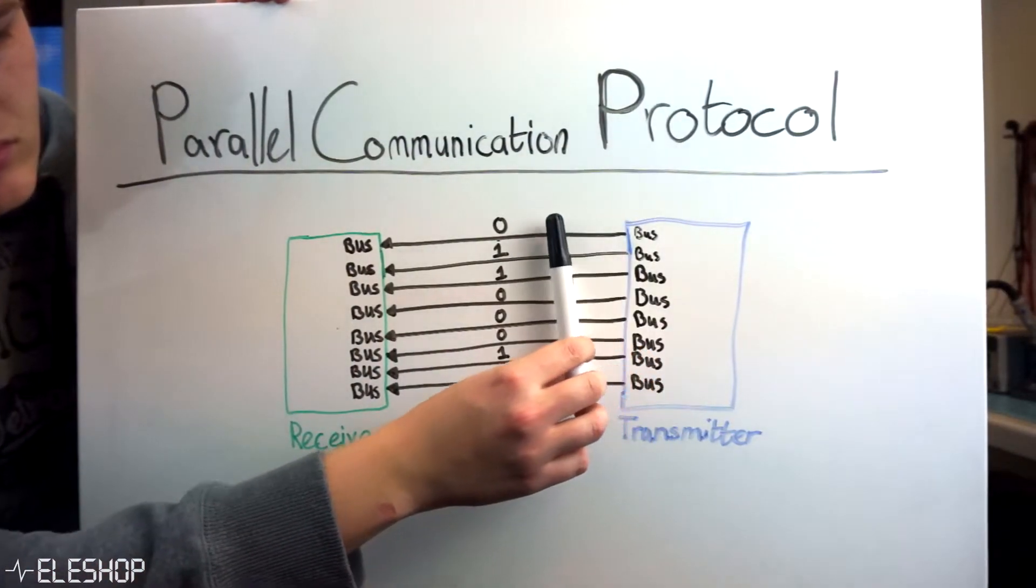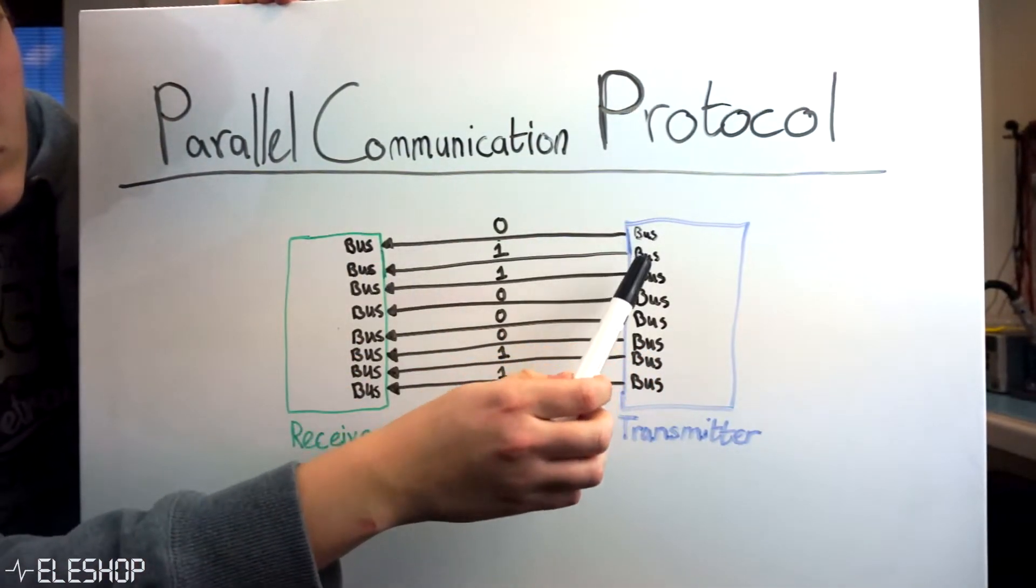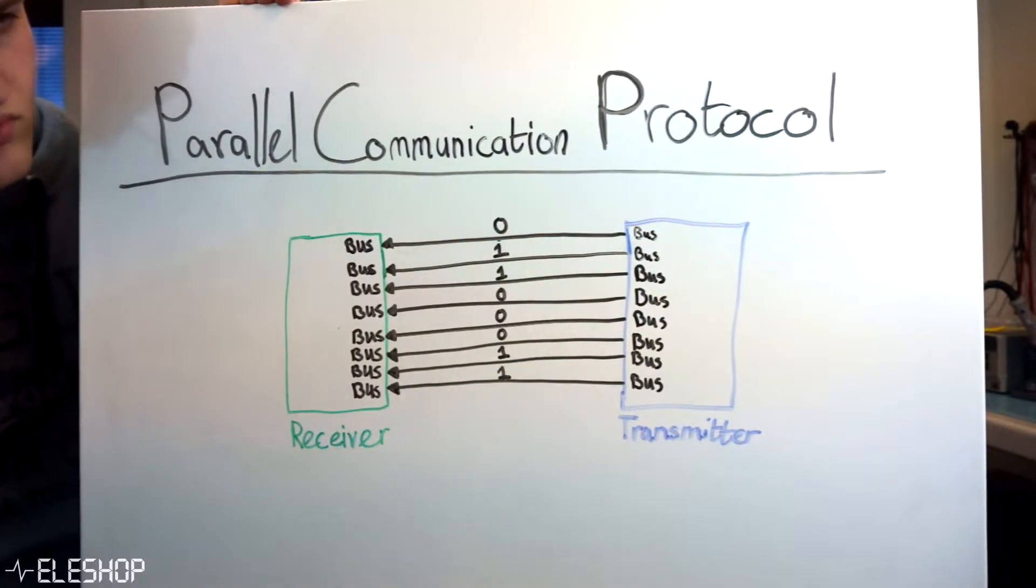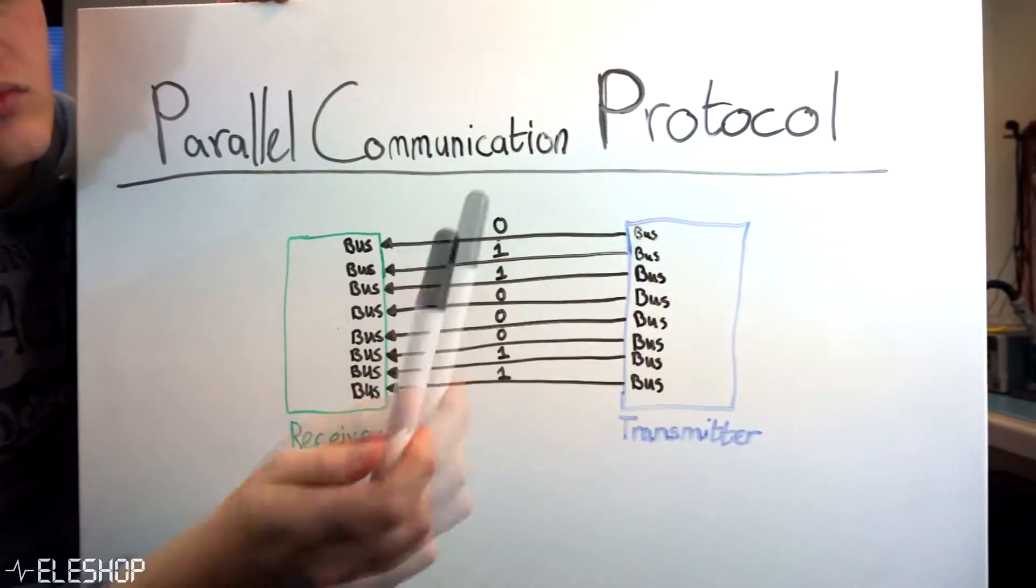If the data bits are transmitted at the same time in parallel over several data buses or channels, then we're talking about parallel communication protocol.